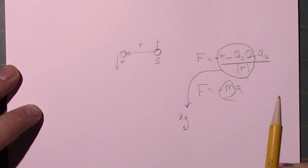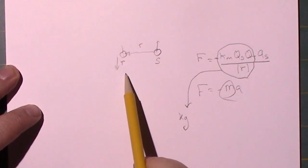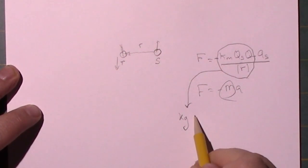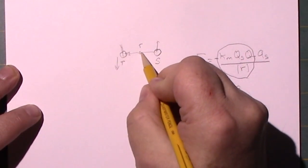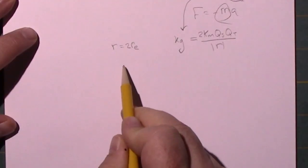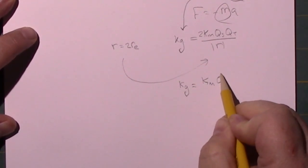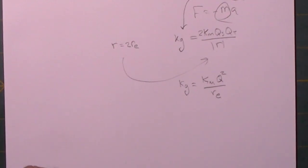This is just the force of one acting on the other. We have to get the total kilograms of the system, so we multiply this by two. Our effective kilograms, electrical inertia of our system, is two times k_m q_s q_t divided by the radial distance between the two. Because we're modeling this system as little r_e where r equals two little r_e, we can substitute that and then we have the kilograms of the system, just k_m q squared over little r_e.